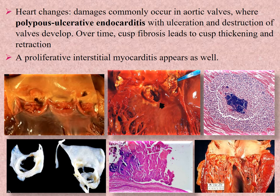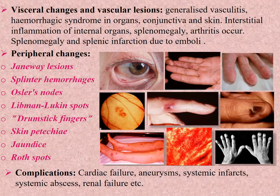The microscopical slide of vegetation shows blue bacterial colonies surrounded by leukocytic infiltration, with destroyed cusps visible in the lower part of the slide. Visceral changes and vascular lesions include: general vasculitis especially of small and medium caliber vessels, hemorrhagic syndrome in organs, conjunctiva and skin, interstitial inflammation of internal organs, splenomegaly, and arthritis.